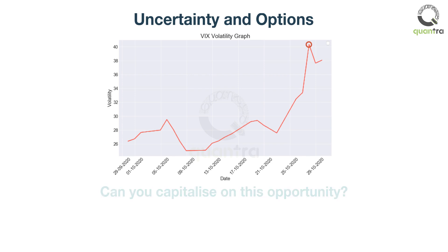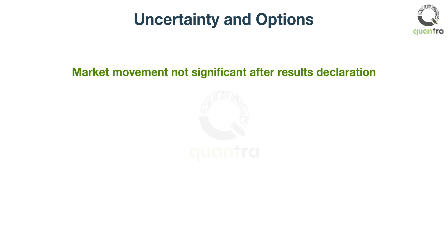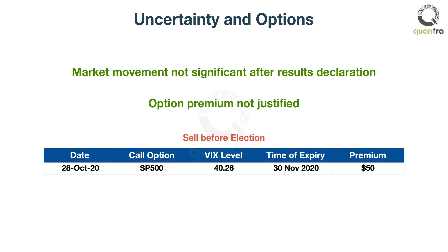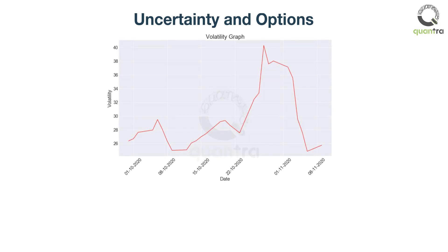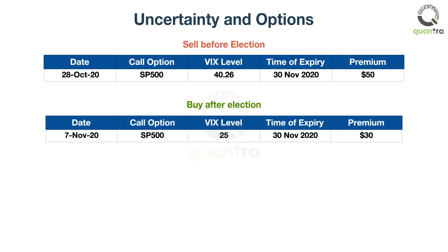As an options trader, can you capitalize on this opportunity? There is a lot of uncertainty on who will win. But at the same time, you have observed in past elections that markets don't move much after the results are declared, and your quant models suggested that the premiums are unjustifiable. Therefore, you decide to sell a S&P 500 call option before elections for $50. The time of expiry is after elections. The election results are declared — as expected, the uncertainty reduced, and so did the options prices. You squared off your options position for $30, and made $20 from this trade.